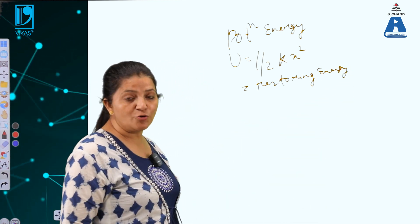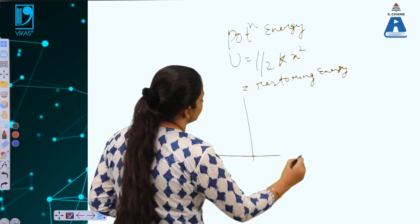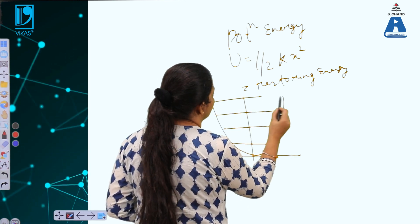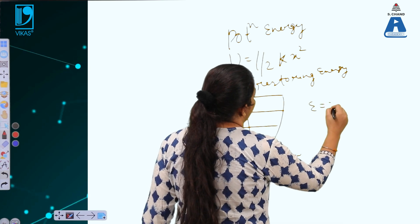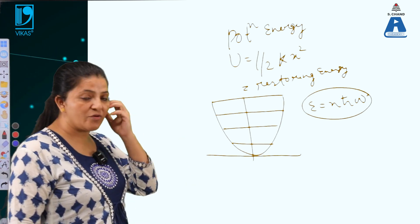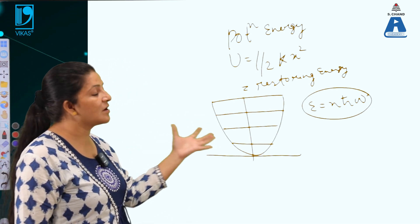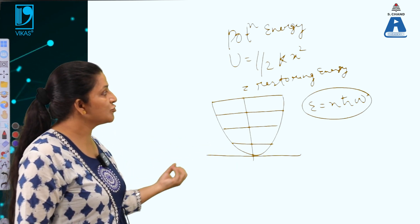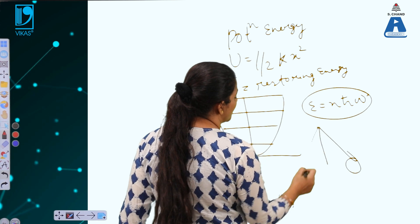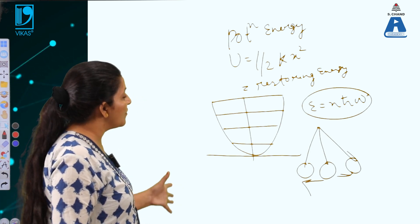The restoring energy comes into play due to the restoring force present in the system. When we plot it, the variation is parabolic for a simple harmonic oscillator. The total energy is given by nhω. The potential energy U is the case when there is no damping force — the body continuously oscillates between the mean and extreme positions with fixed displacement amplitude.